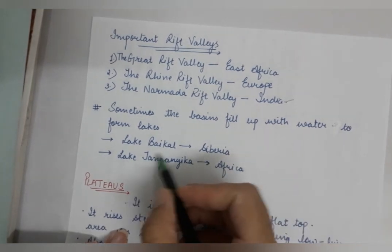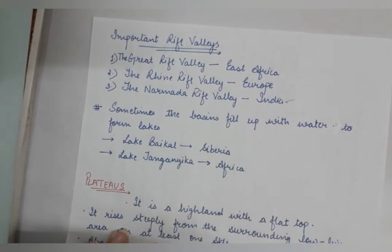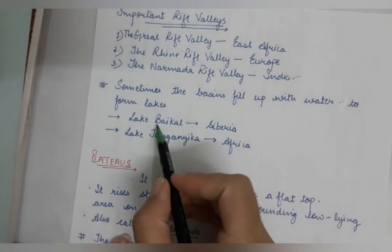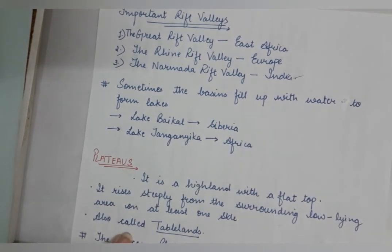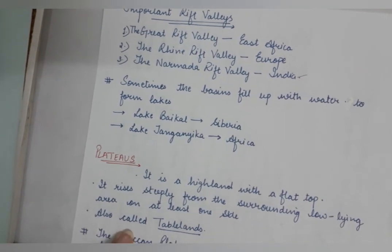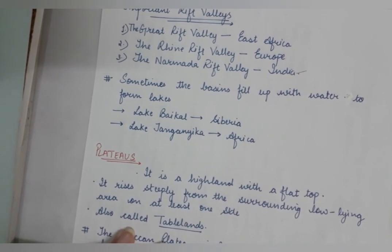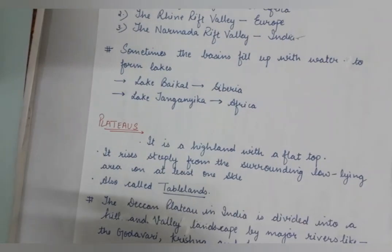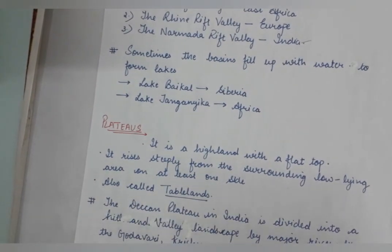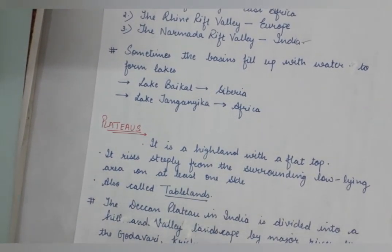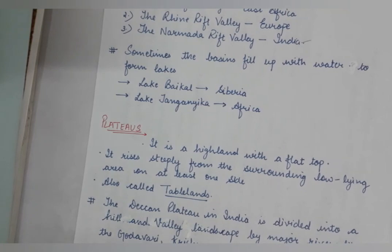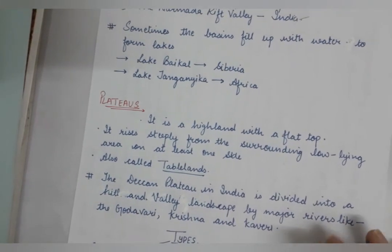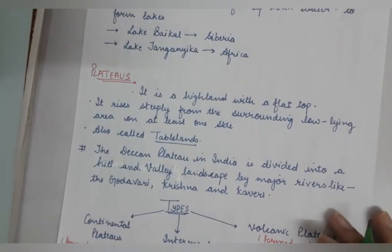Sometimes the basin formed in a rift valley is filled up with water to form a lake. Two such lakes are Lake Baikal in Siberia and Lake Tanganyika in Africa. These two lakes are formed due to water occurring in the rift valley.